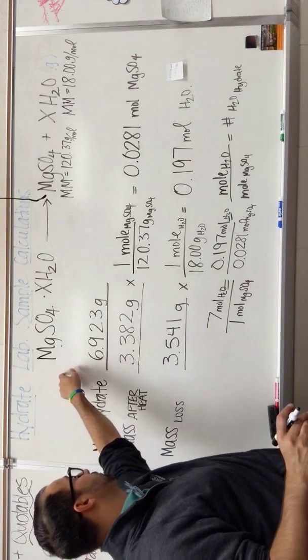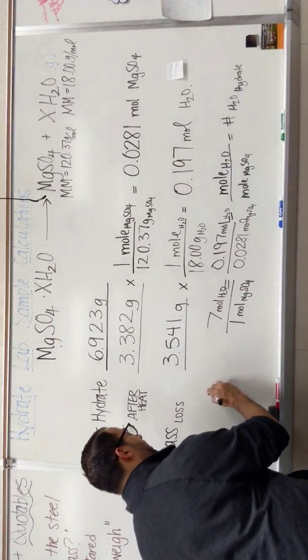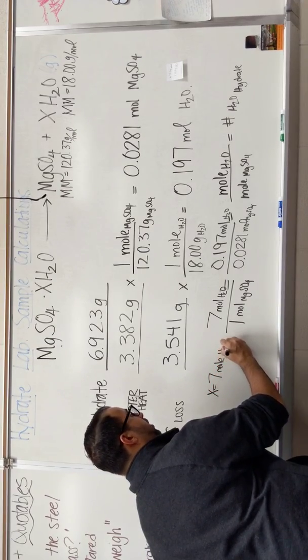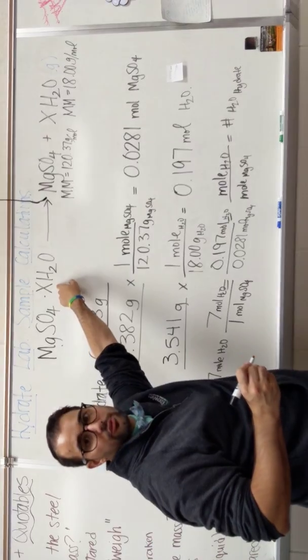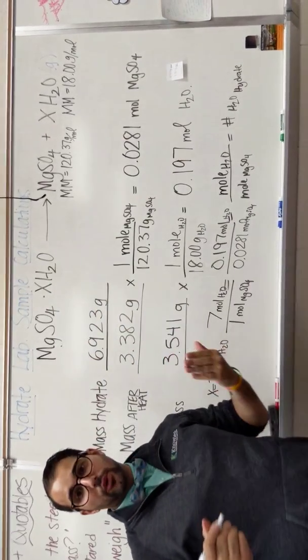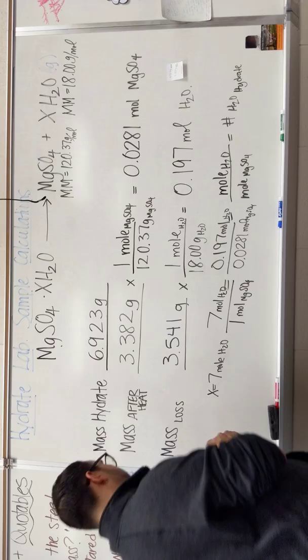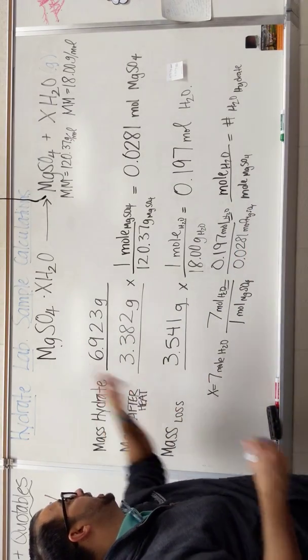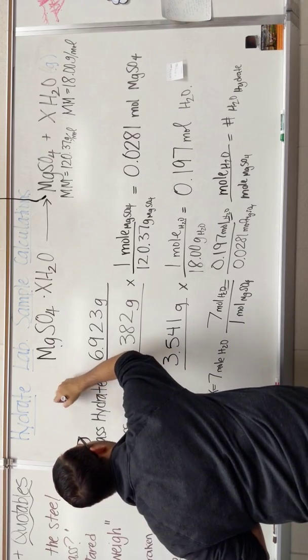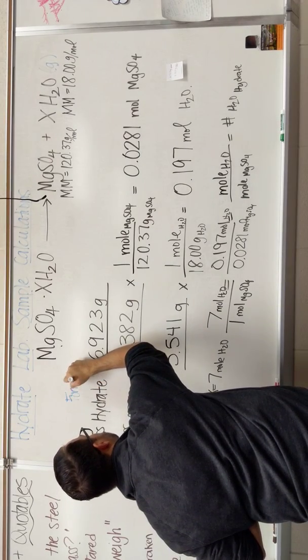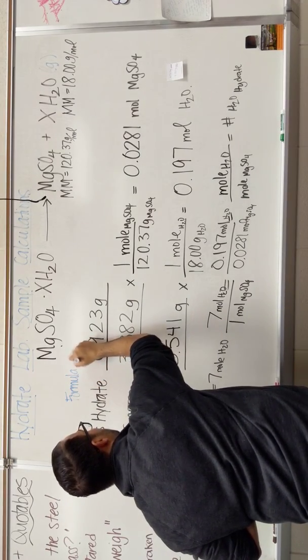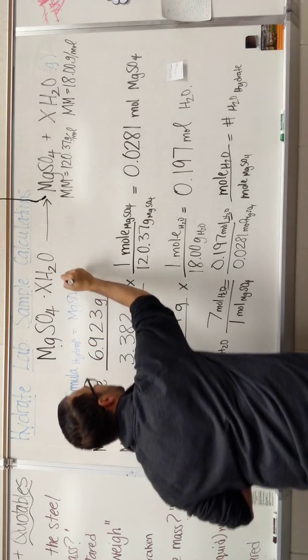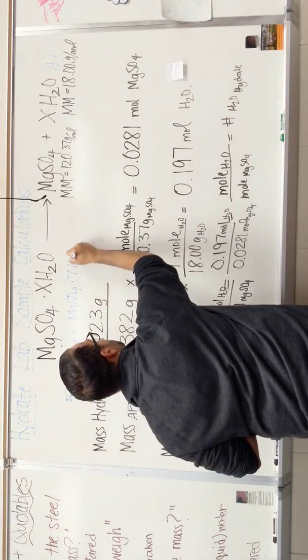So if I have 1 MgSO4, my value of X is equal to 7 moles of H2O. So that's what X goes here. So now, if the question says, what is the formula of my hydrate? I'll write this in a different color. I'm going to substitute the value of 7 in to X. The formula for my hydrate, according to my data here, would be MgSO4·7H2O.